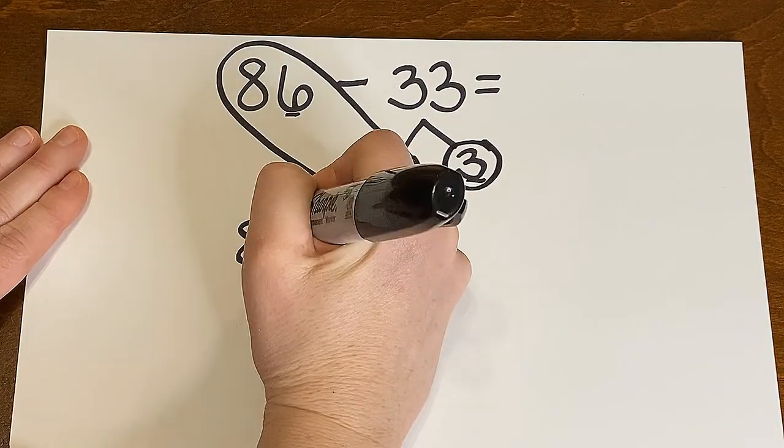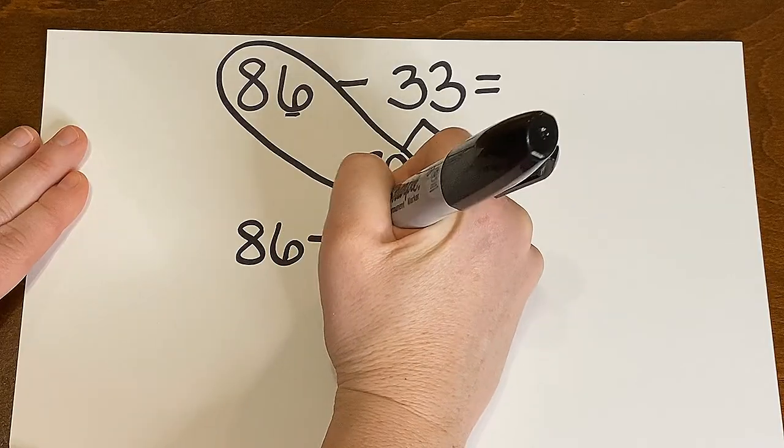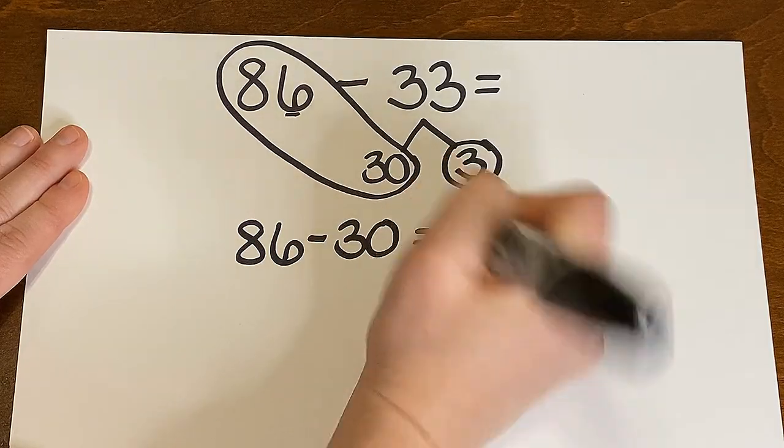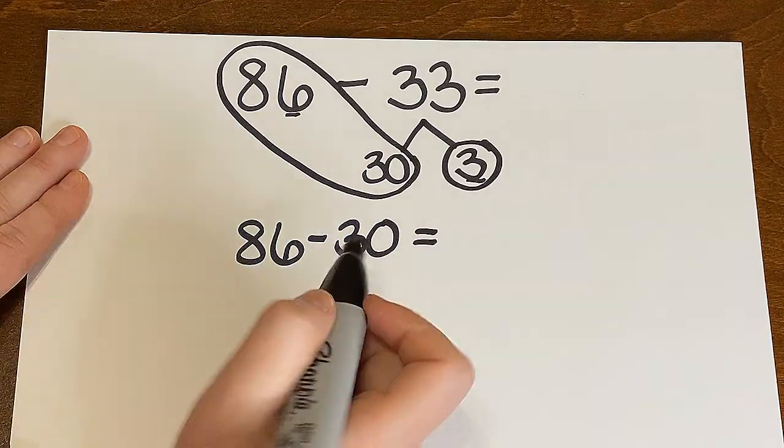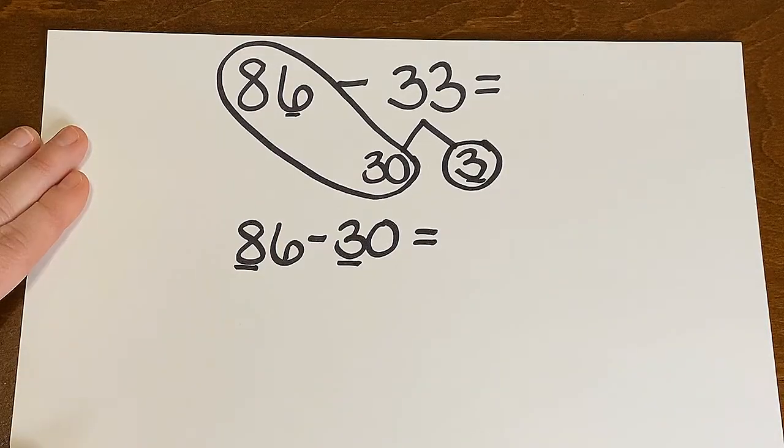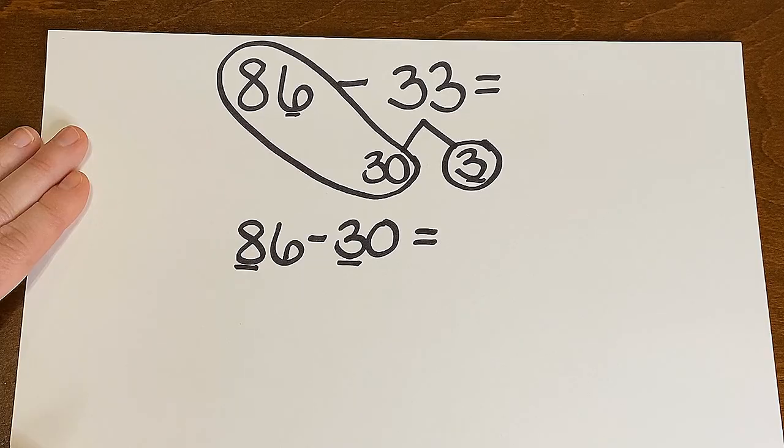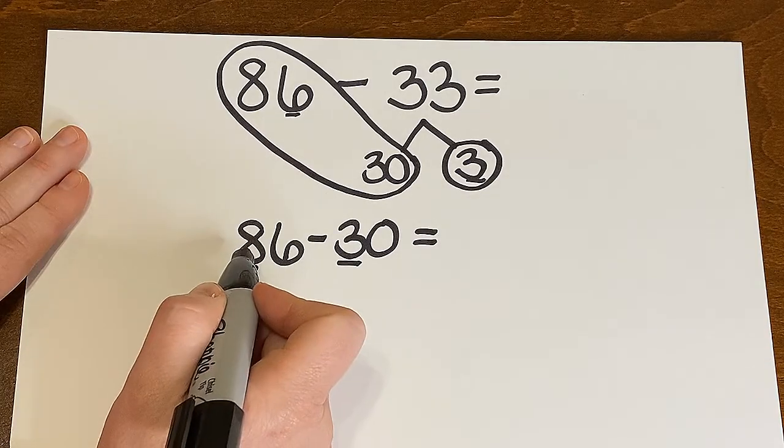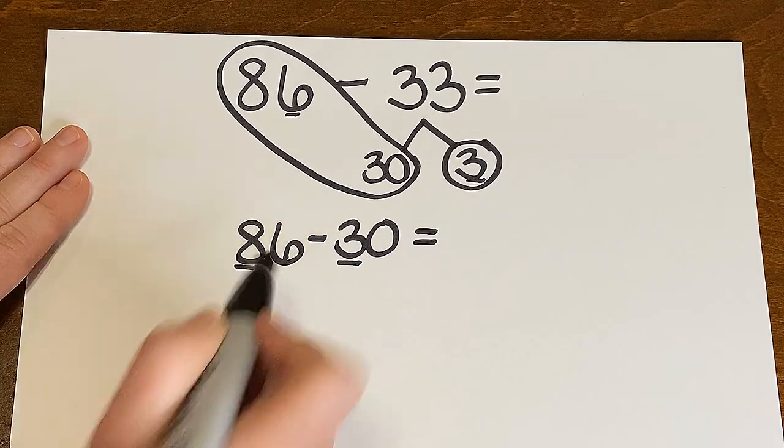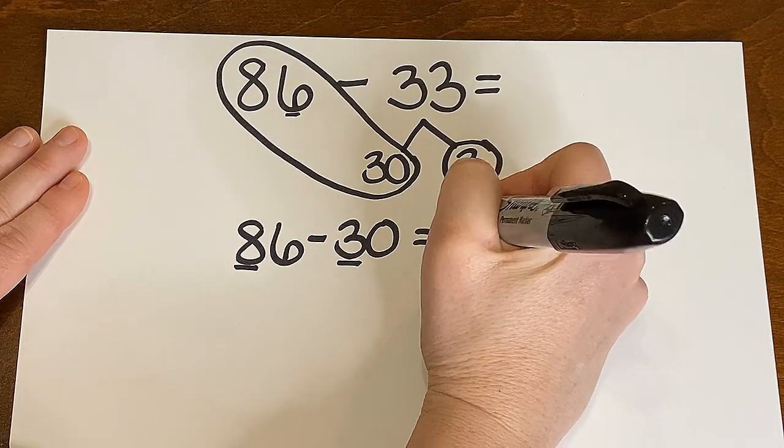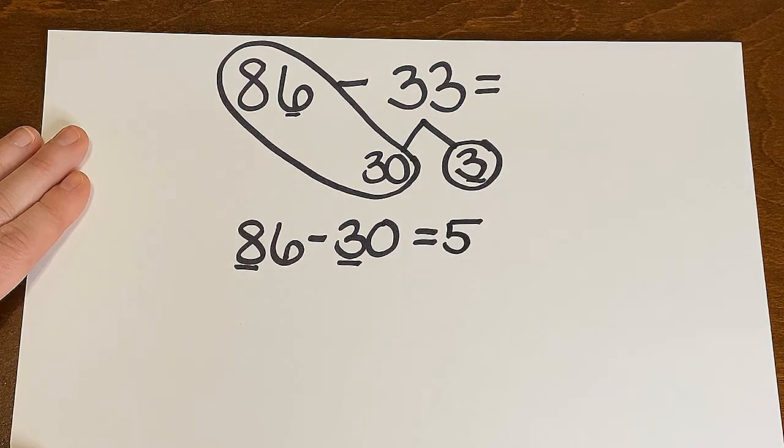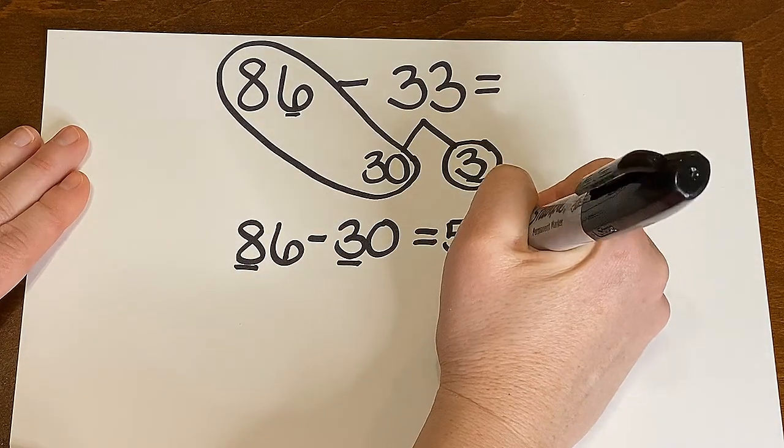So I think to myself, 86 take away 30. And I like this problem because there's a zero in the ones place. So I'm really only subtracting the tens place. Now here's my tens. I underlined them so I can really, really hone in on them. 8 take away 3. If I'm taking away 3 tens from that 8, I'm now at 5 tens. And I didn't take anything away from the ones place because of that zero. So I'm at 56.